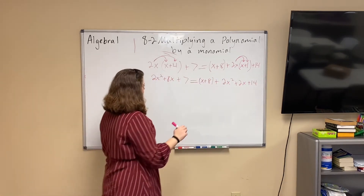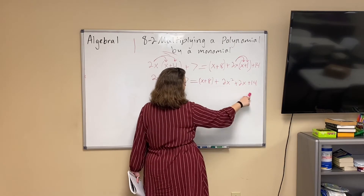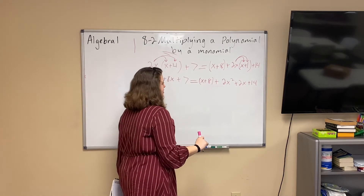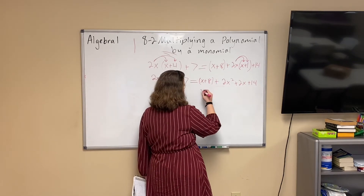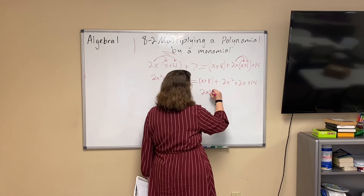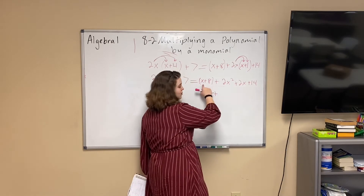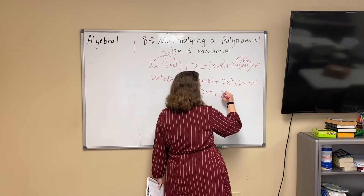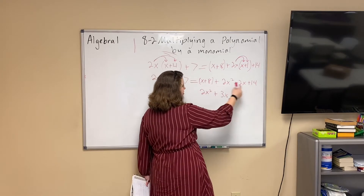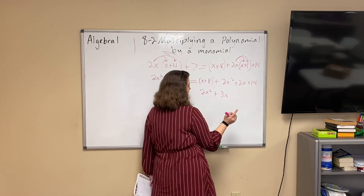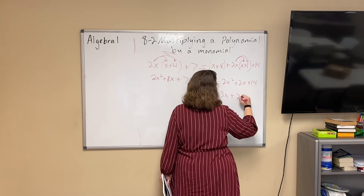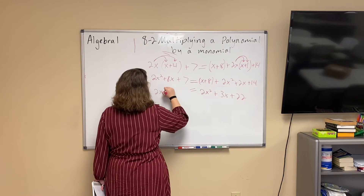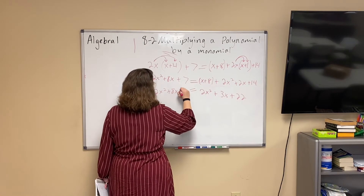Now we can simplify the right side a bit more by grouping like terms. 2x squared is by itself, then we have 2x and 1x — so 2x plus 1x is 3x. Then 8 plus 14 gives us 22. So the right side simplifies to 2x squared plus 3x plus 22. And that all equals 2x squared plus 8x plus 7.